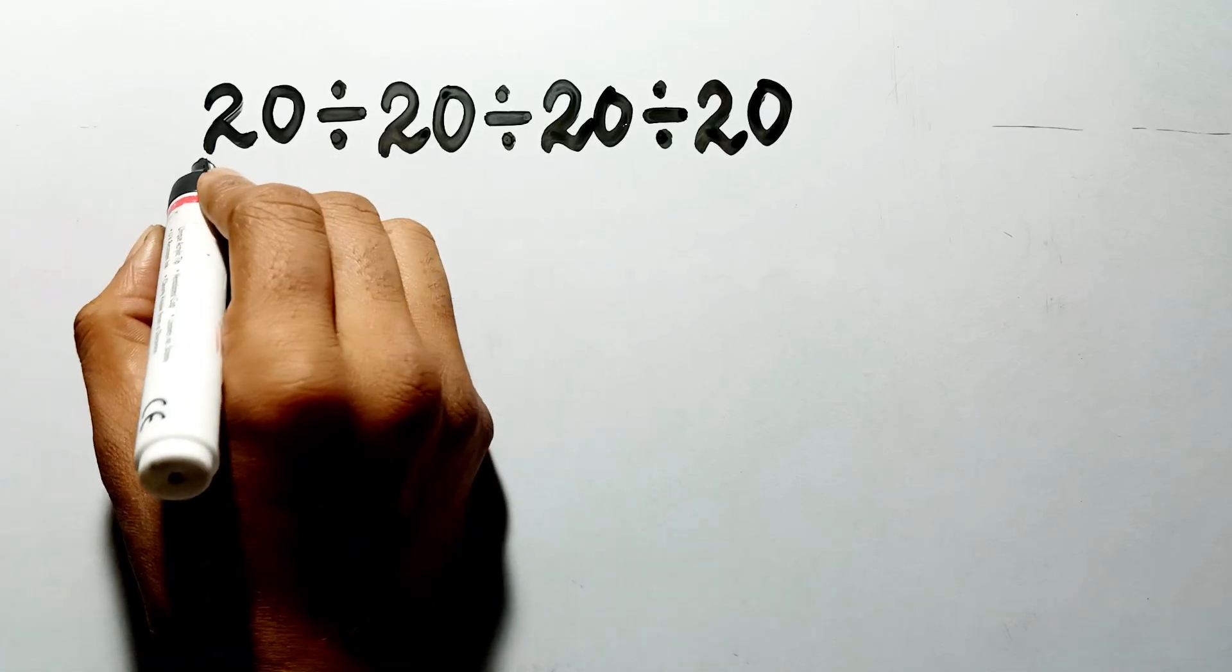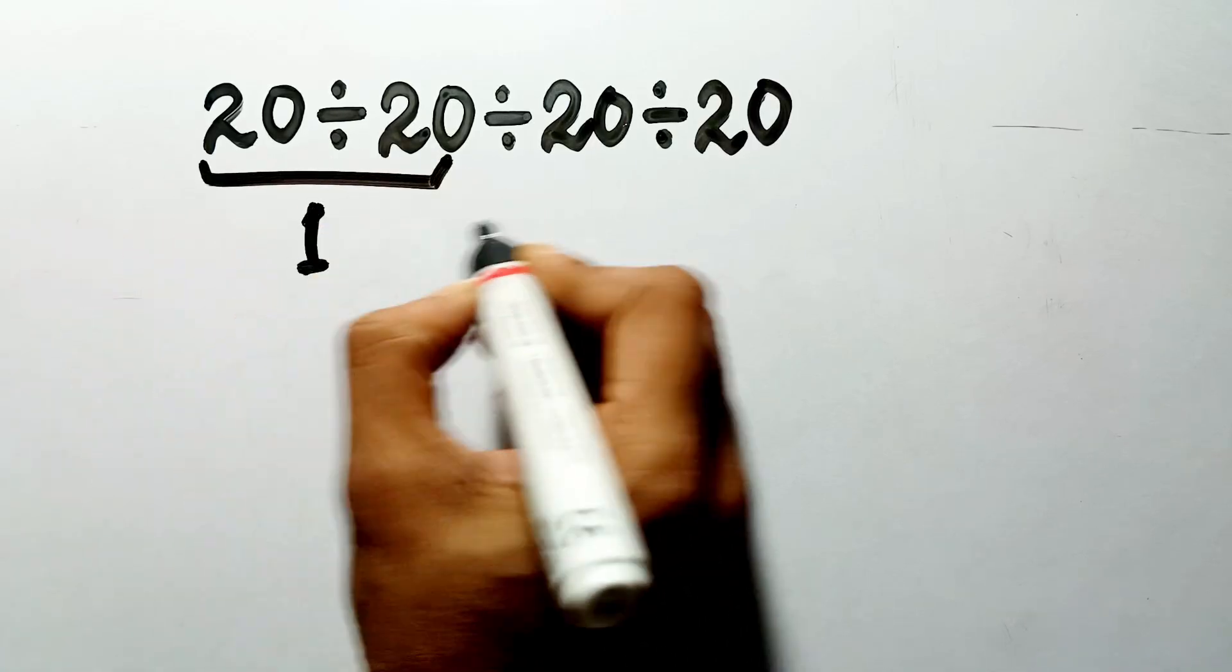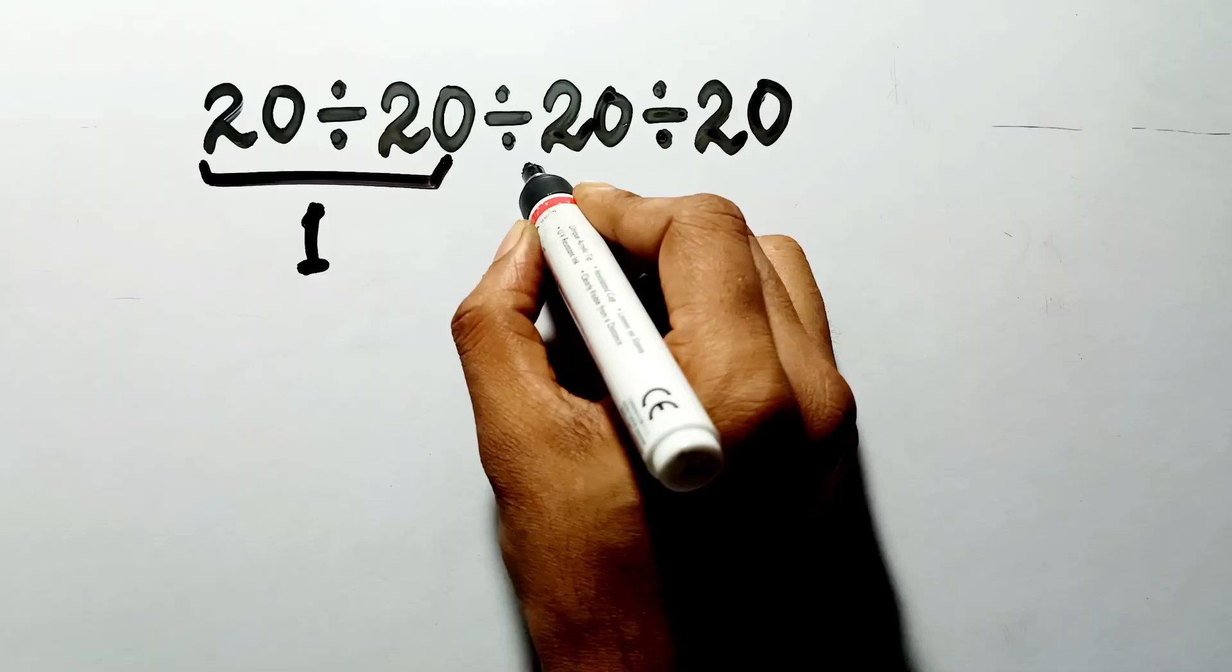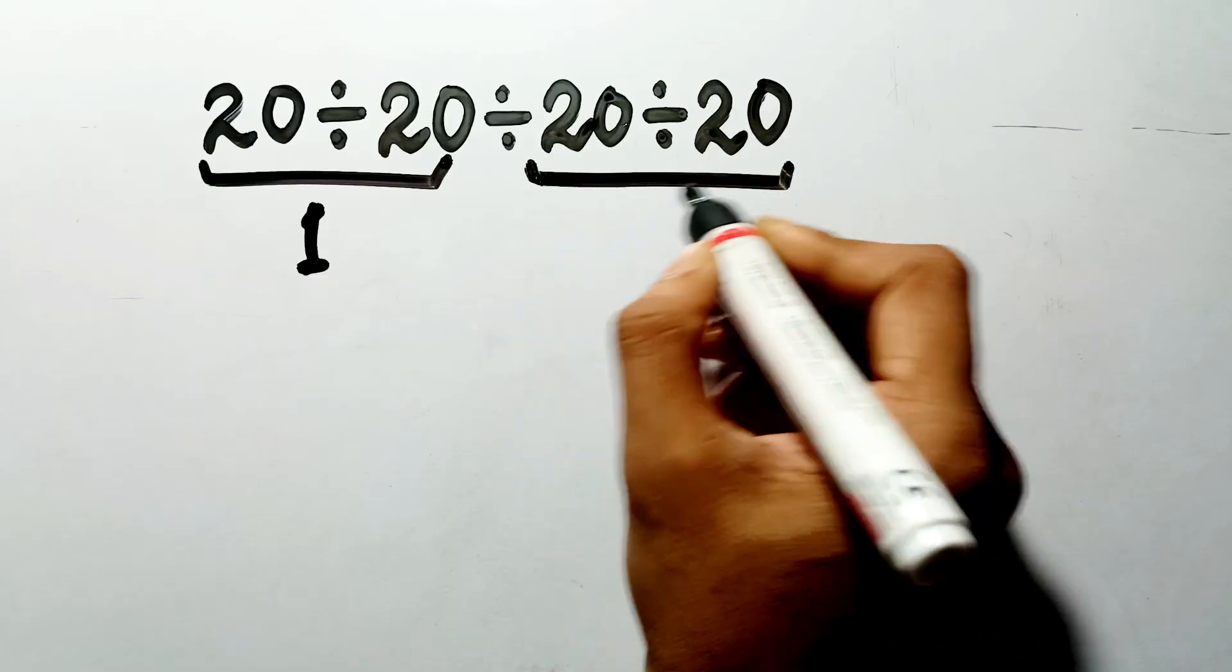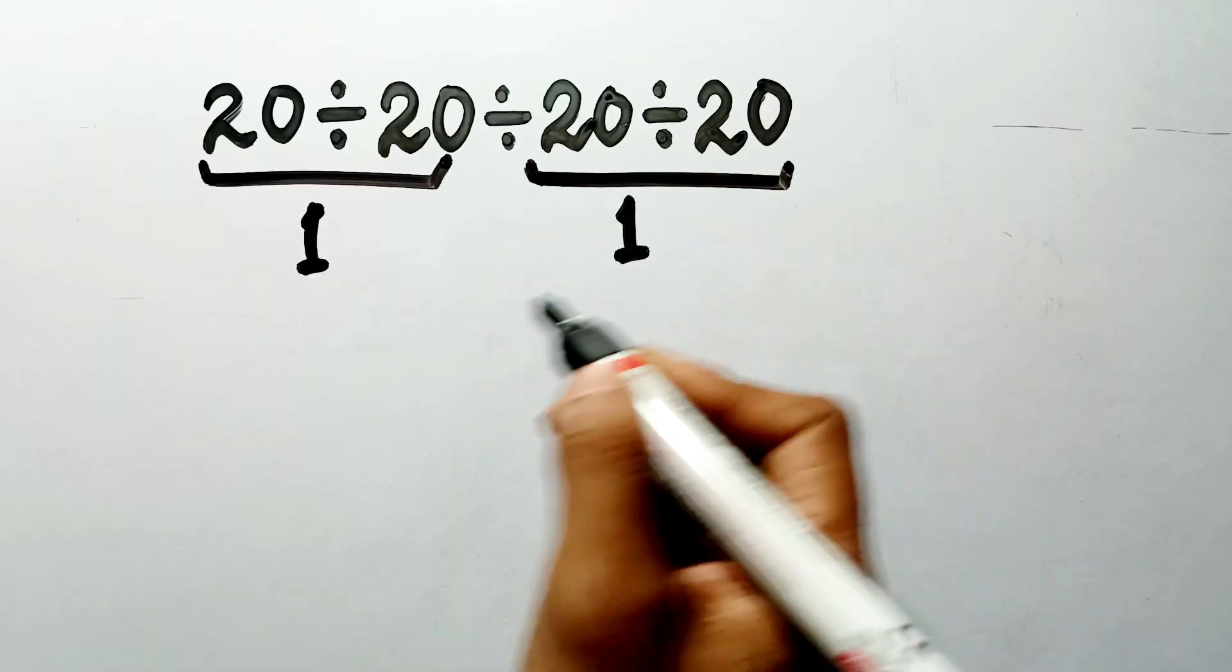20 divided by 20 gives us 1, and again here, for the second pair, we have 20 divided by 20, which also gives us 1.